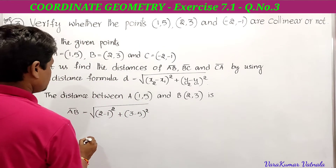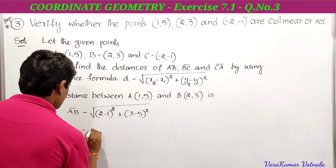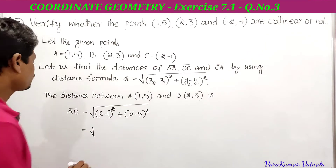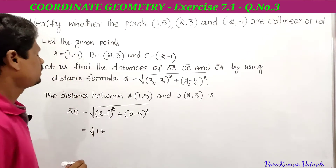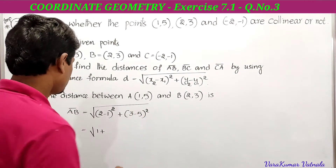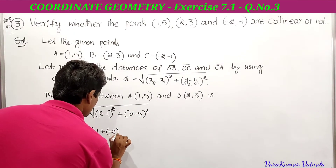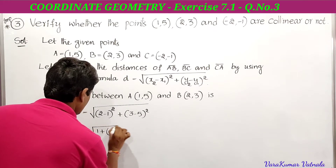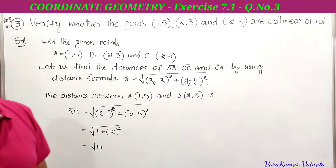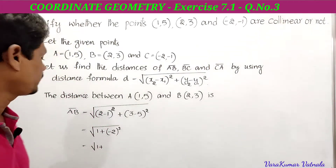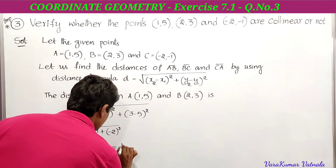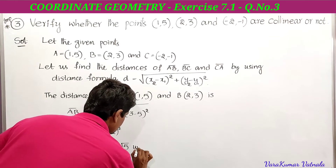Simplifying: 2 − 1 = 1, so 1² = 1. And 3 − 5 = −2, so (−2)² = 4. Therefore AB = √(1 + 4) = √5 units.